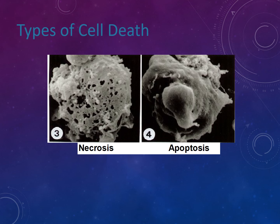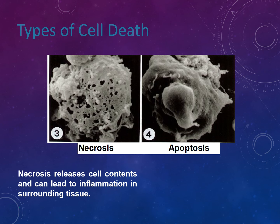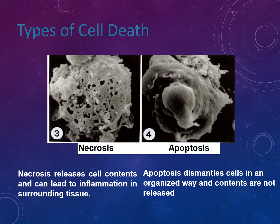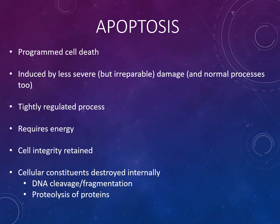The types of cell death are necrosis and apoptosis. Necrosis releases cell contents that can lead to inflammation in surrounding tissue, whereas apoptosis dismantles cells in an organized way and contents are not released. Apoptosis is programmed cell death, triggered by less severe but irreparable damage; it is also a normal process. It is a tightly regulated process that requires energy — cell integrity is retained, and cellular components are destroyed internally via DNA cleavage, fragmentation, and proteolysis of proteins.